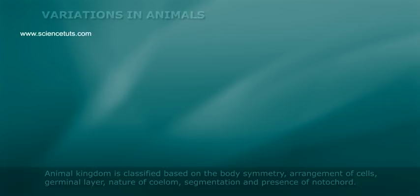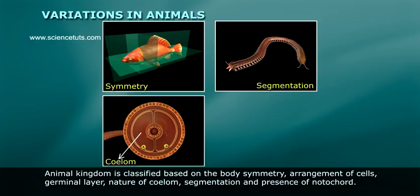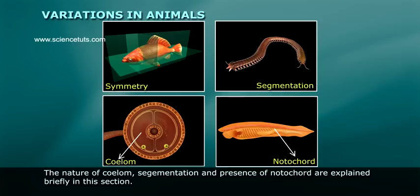The animal kingdom is classified based on body symmetry, arrangement of cells, germinal layer, nature of coelom, segmentation, and presence of notochord. The nature of coelom, segmentation, and presence of notochord are explained briefly in this section.